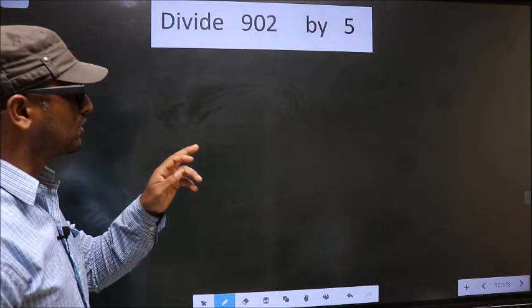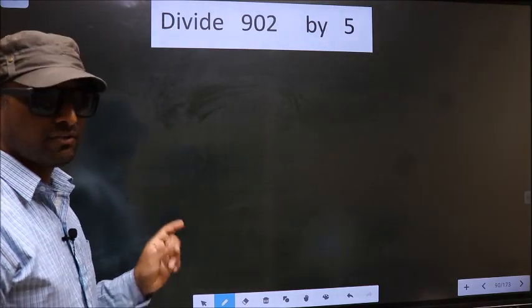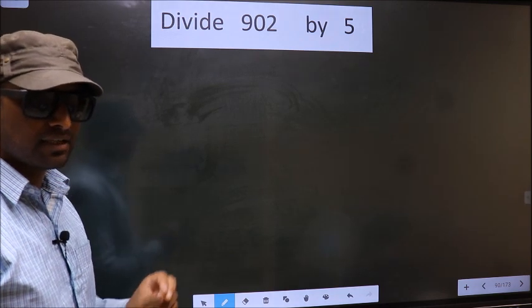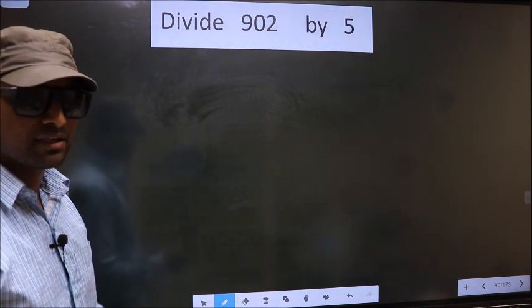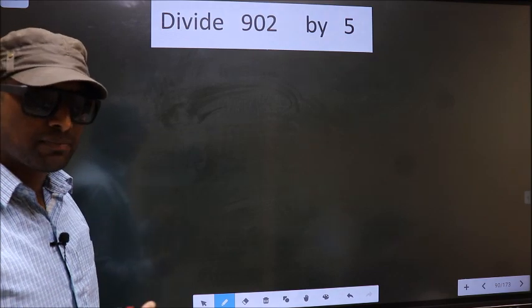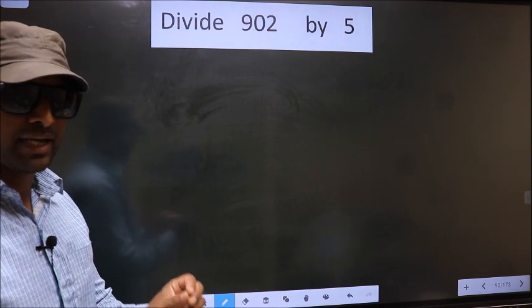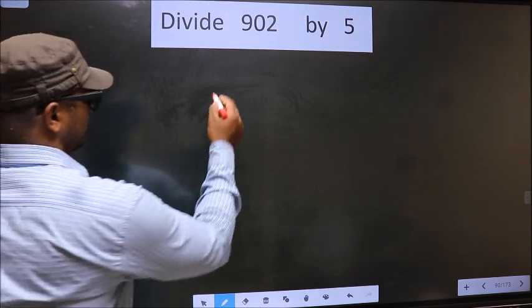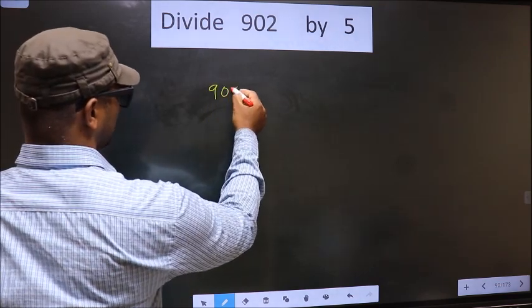Divide 902 by 5. While doing this division, many do this mistake. What is the mistake that they do? I will let you know, but before that we should frame it in this way: that is 902.